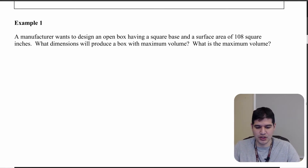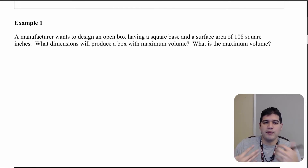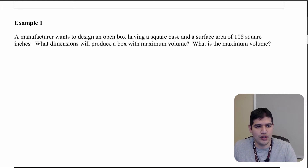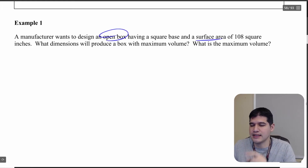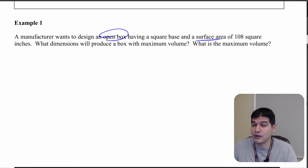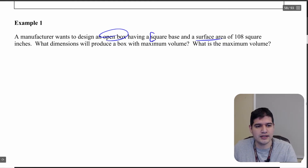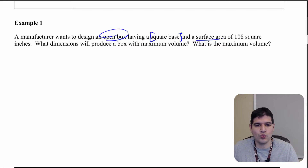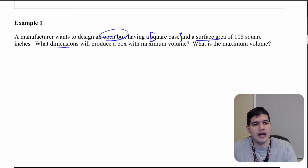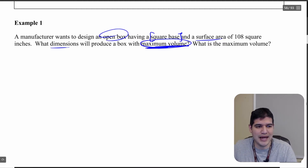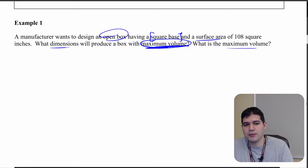Now let's look at Example 1 and go through these steps. A manufacturer wants to design an open box having a square base and a surface area of 108 square inches. We're given surface area and an open box — that's important. What dimensions will produce a box with maximum volume? So we're looking for length, width, and height, and we want to maximize that volume. There are two questions here and we need to answer both.